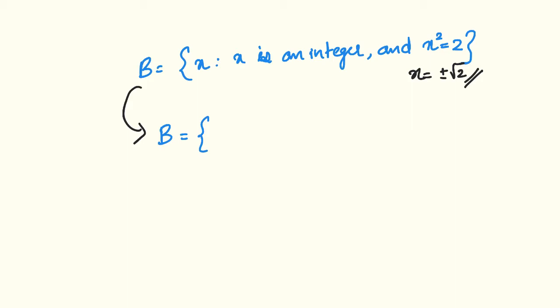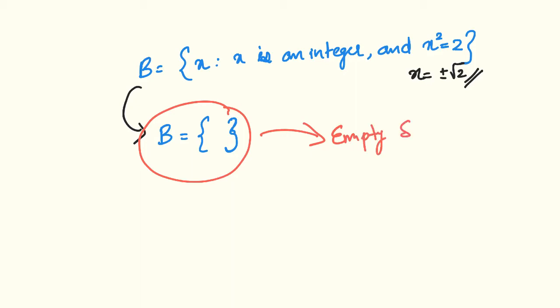Since plus or minus root 2 are not integers, set B does not have any elements. This is an empty set. So set B equals phi.